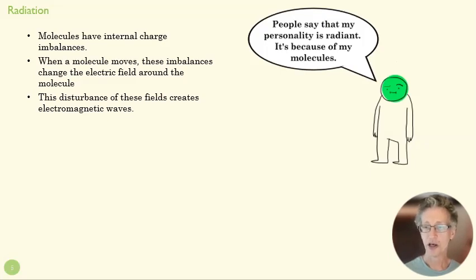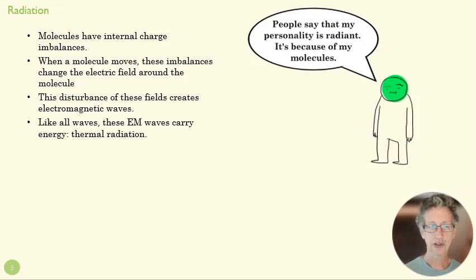And so these disturbances in the electromagnetic fields around the molecules create electromagnetic waves. So the fact that you have charge imbalances and motion means that you're constantly having changing electromagnetic fields, which sends out electromagnetic waves, which is radiation. So those waves carry energy away from any molecule that's actually in motion.